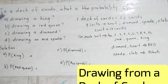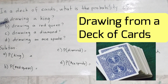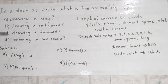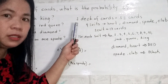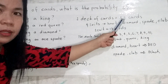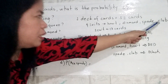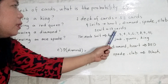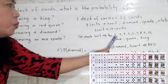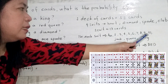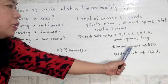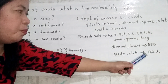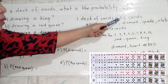Let's solve another problem. In a deck of cards, what is the probability of drawing a king, a red queen, a diamond, and an ace of spades? One deck of cards equals 52 cards. We have 4 suits: heart, diamond, spade, and club. For each suit, we have 13 cards: ace, 2, 3, 4, 5, 6, 7, 8, 9, 10, jack, queen, and king. So 13 times 4 equals 52 cards. Diamond and heart are red; spades and clubs are black. Our sample space contains 52 cards.